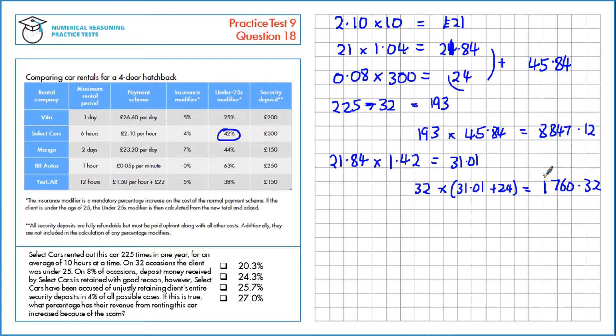Now, let's figure out the money that they make from the scam. It's retained in 4% of all possible cases, and we know there's 225 cases. If we're looking at 4%, we've got 225 times 0.04, which is 9 people. So if 9 people's money was retained, that's 9 lots of £300, which is £2,700.